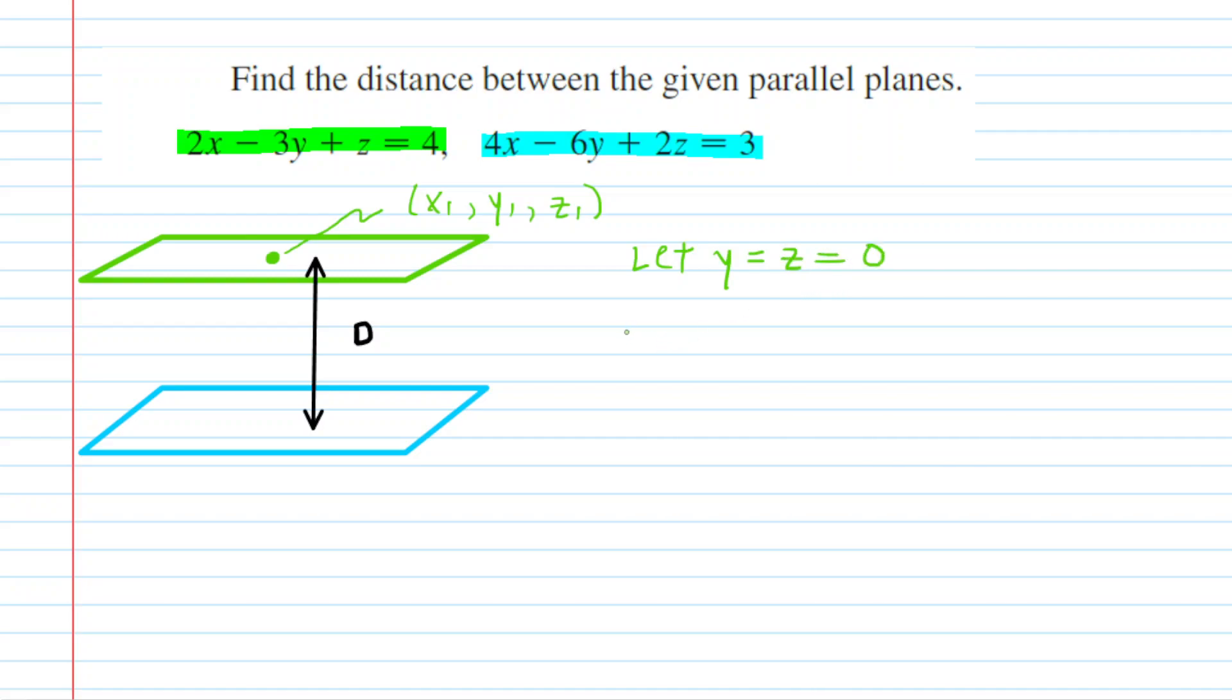So, for example, we have the equation for the green plane given here, and we're just going to go ahead and plug 0 in for the y-coordinate as well as the z-coordinate. And the reason this is easy is, of course, these terms will zero out. We now have 2x is equal to 4. Divide both sides of that by 2, and you can see that the x-coordinate is equal to 2.